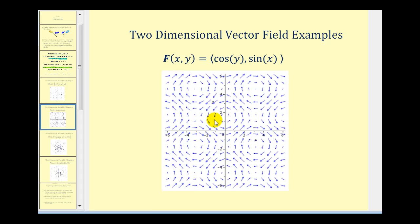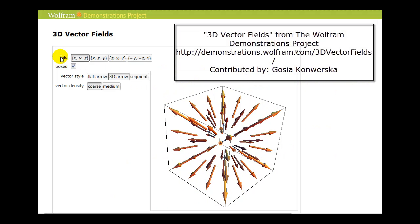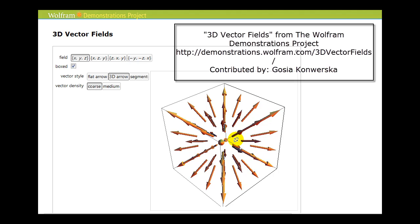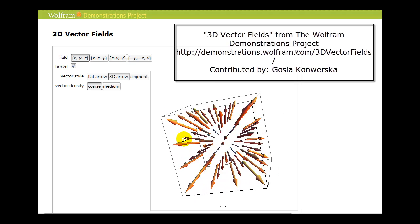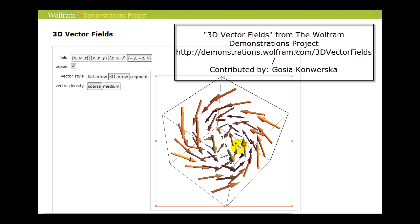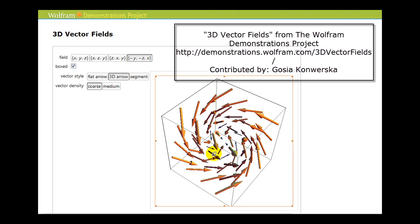Now let's look at a few vector fields in three dimensions. Here's the graph of the vector field F(x, y, z) = ⟨x, y, z⟩. Each vector gives a direction and magnitude, where the length represents the amount of force at that point — you might think of this as an explosion from the center of the box. Here's another three-dimensional vector field given by F(x, y, z) = ⟨-y, -z, x⟩, which produces more of a circular motion, in contrast to the outward direction of the first example.